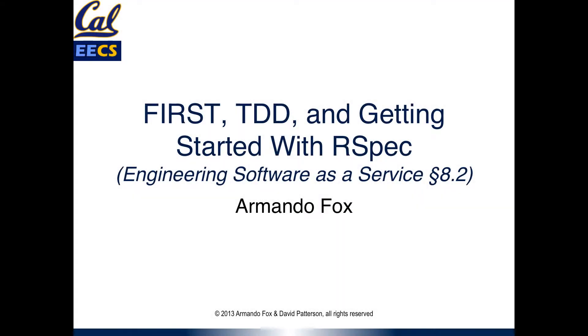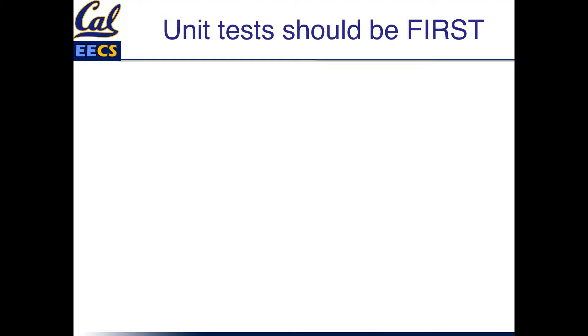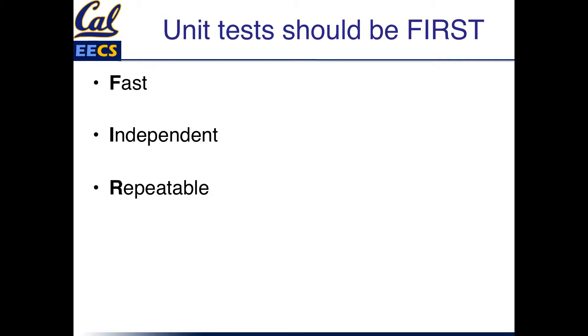Now that we know how testing works in a modern software development environment, we're going to take a look at the tool called RSpec that we're going to be using for most of our testing in this course. In introducing it, I'm going to introduce an acronym to help you remember some of the principles that go along with writing tests. Unit tests should be FIRST — you can remember by the acronym FIRST these desirable properties when you're writing unit tests.